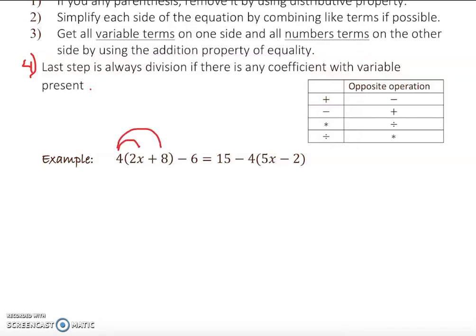So I'm going to distribute that down here. Also I'm going to distribute there. So it will give me, allow me to write, 8x plus 32 minus 6. Remember, you don't distribute any further because the parenthesis ends up there, okay? So you bring down negative 6 equal to 15.